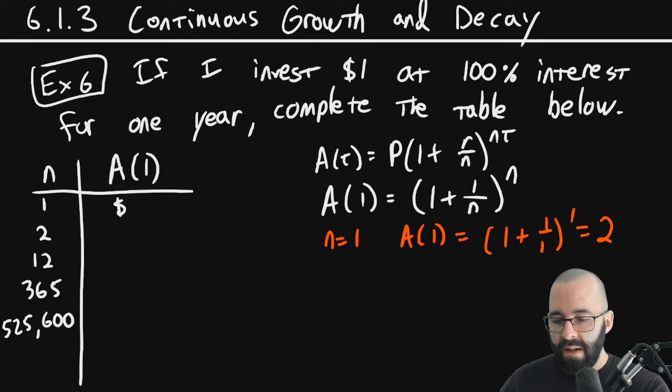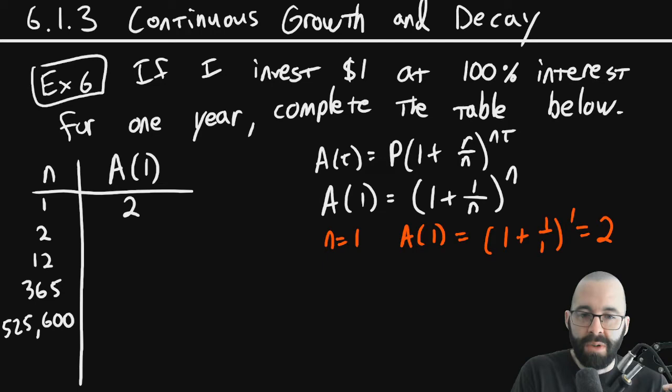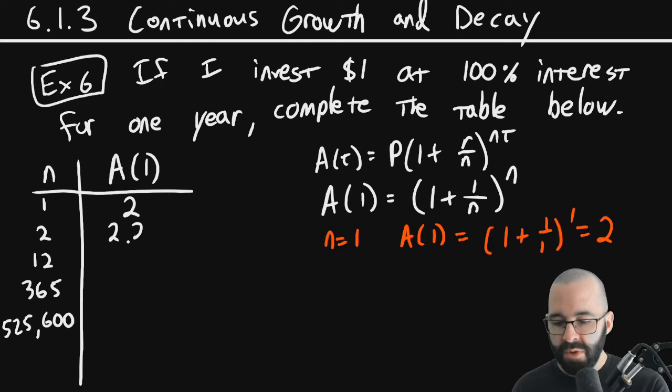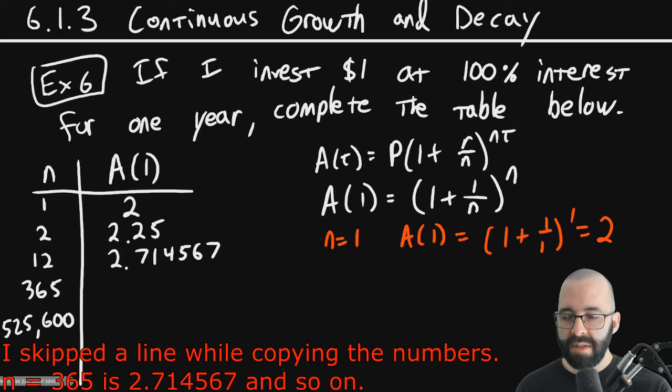If n=1, then A(1) is going to be 2. We'll have $2, right? 100% interest rate, it's going to double after a year if it only compounds once. But remember, if it compounds twice, that means we get 50% interest twice. So that second 50% is going to also compound on that first part. That's going to be $2.25. If we compound 12 times, that's going to be about $2.71. If we have 365 days that it compounds, if it compounds every single day in a non-leap year, that's going to be 2.718127.